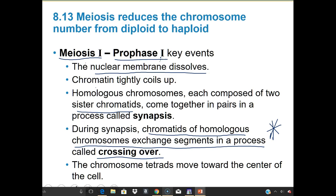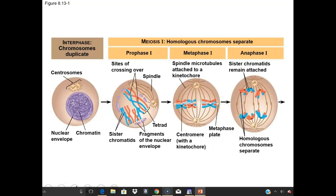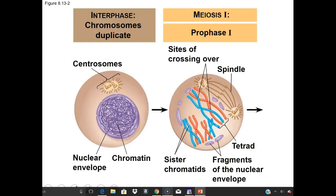The chromosome tetrads — 'tetra' meaning four — move towards the center of the cell. In the diagram, we move from interphase with chromatin in the nucleus into prophase I where tetrads form: homologous chromosomes in red and blue, with their duplicated sister chromatids, all four pieces organizing together. Spindle fibers form and the nuclear envelope breaks down — same things as before, except now homologous chromosomes are matching up with each other.